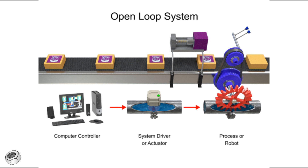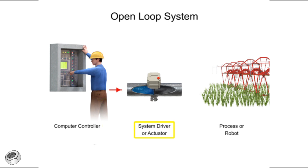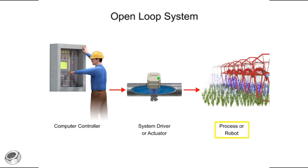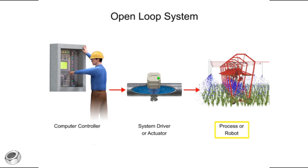A simple example of an open-loop system is an industrial sprinkler system. In this example, the programmer updates the computer controller, which will turn the sprinkler on at a designated time. When the computer sends the signal, the water valve will turn on. When the valve turns on, water flows to the sprinkler and drives a motor that allows the sprinkler to simultaneously move along the field and water the crop.